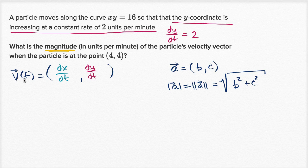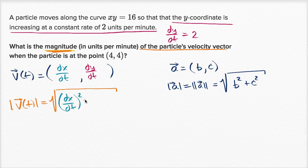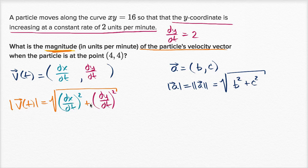So if we want to know the magnitude of our velocity vector, I can write that as the magnitude of v as a function of t. It's going to be equal to the square root of the x component squared — that's dx/dt squared — plus the y component squared, which is dy/dt squared. We already know dy/dt is a constant two units per minute, so dy/dt squared is going to be four.